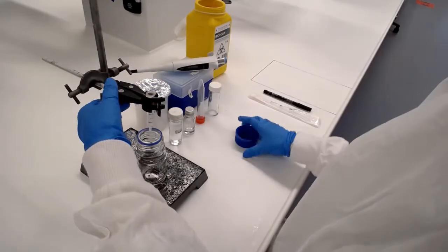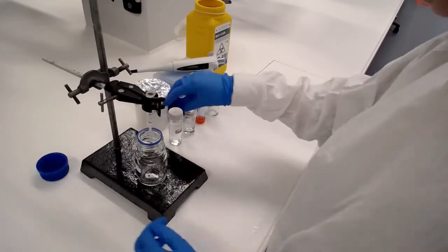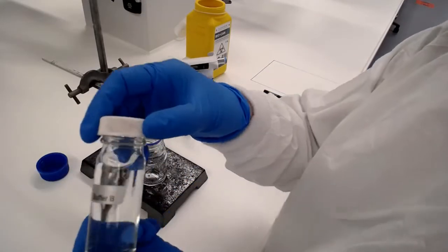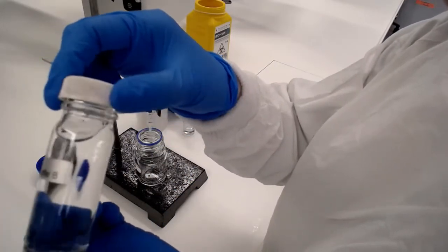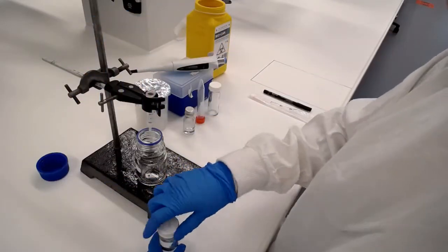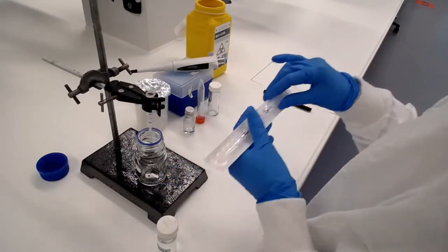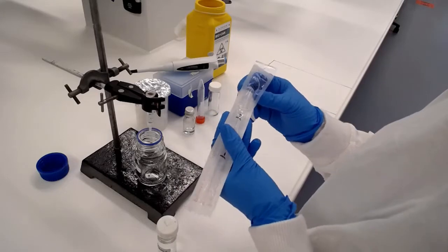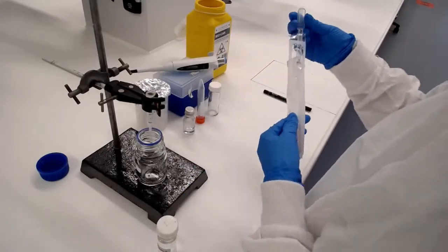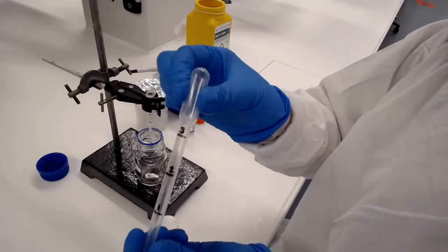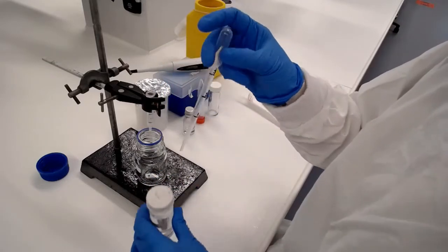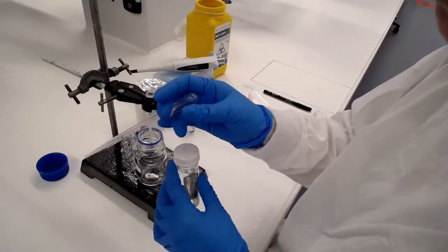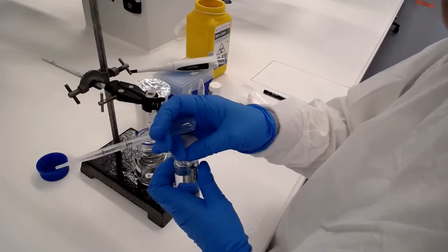Our first task is to equilibrate the column. For this we use buffer B, which is a low imidazole buffer. In the presence of this buffer our E. coli proteins should not stick to the column, but our protein of interest with the 6-his tags should stick. We're going to use a transfer pipette for this, also known as a squeezy bulb pipette.